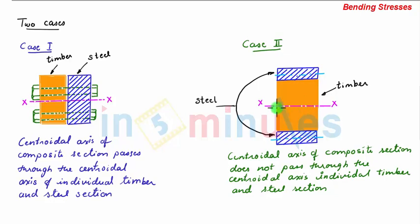But if we see the centroidal axis of the two steel sections, the centroidal axis of the composite section does not pass through the centroidal axis of the two steel sections.